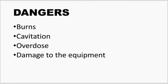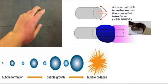Dangers that occur during ultrasound treatment include burns, cavitation, overdose, and damage to equipment. Burns can occur when the ultrasound head is kept stationary, producing excess heat that accumulates in the tissue. Cavitation can potentially damage tissues as discussed. Excessive dose of ultrasound can aggravate symptoms. Damage to equipment occurs when the ultrasound head is kept in the air, causing waves to reflect back and damage the treatment head.